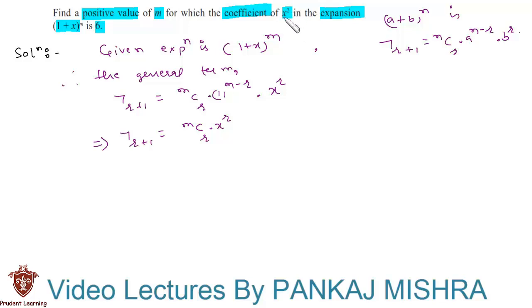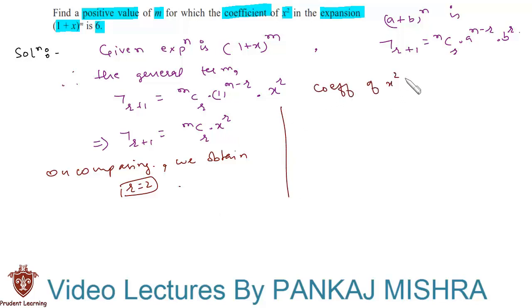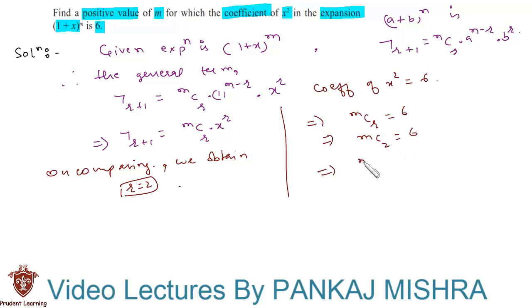Comparing the indices of x in x² and in the general term, we obtain r = 2, since we are given x². Also, we are given that the coefficient of x² is equal to 6. This implies that mCr = 6. Since we already have the value of r, we can write this as mC2 = 6.